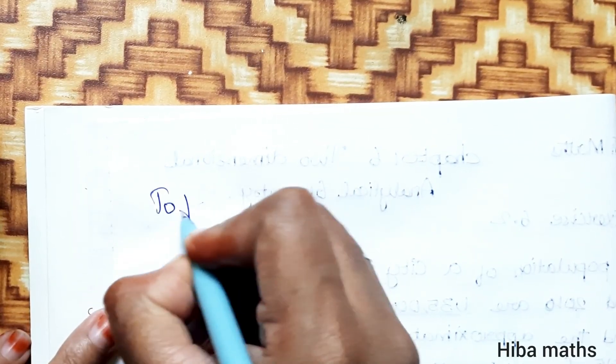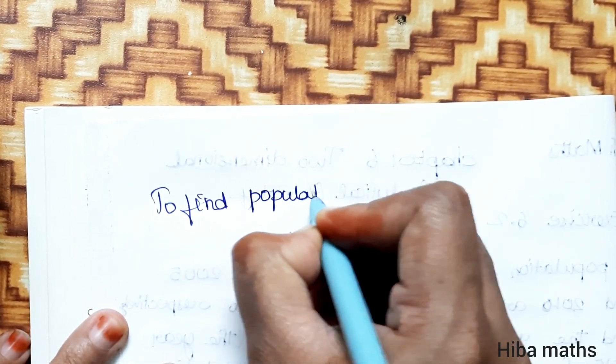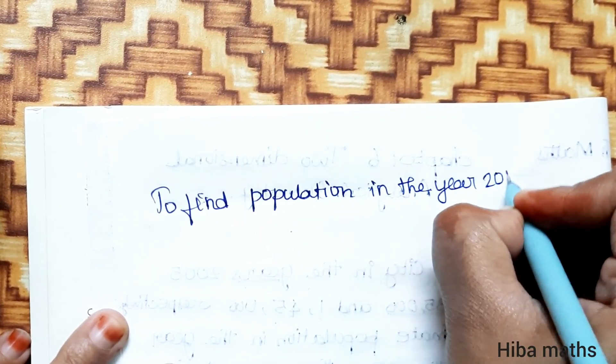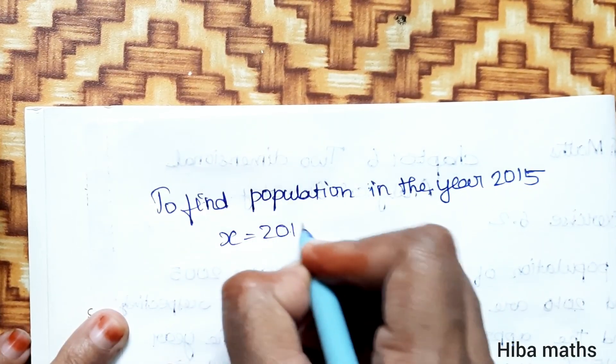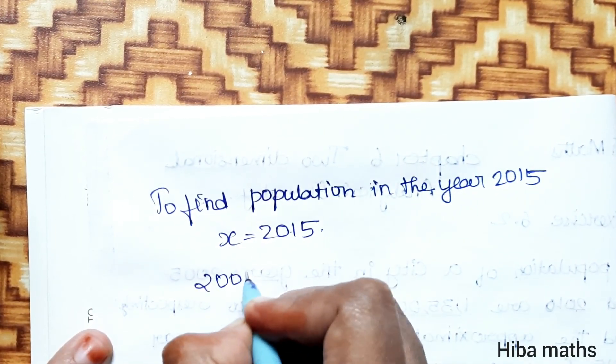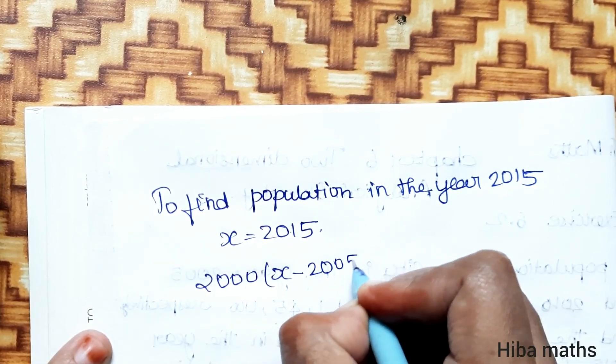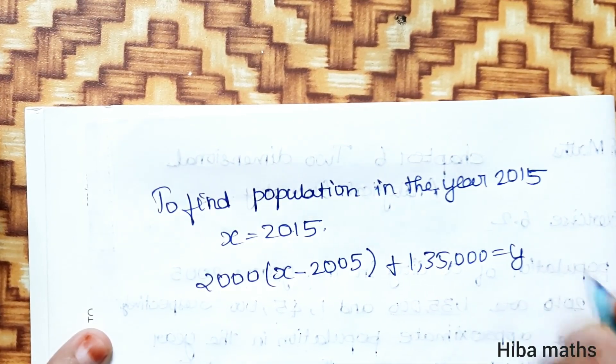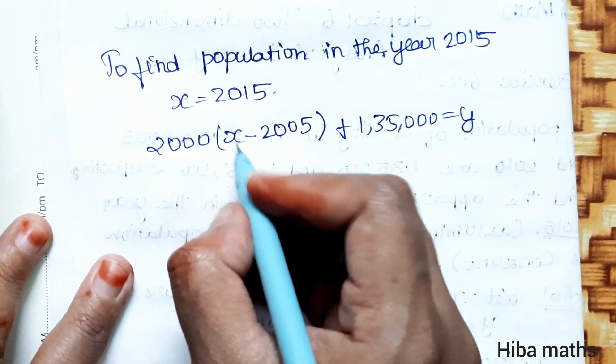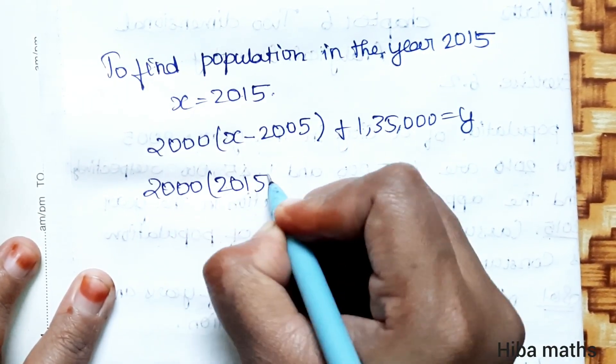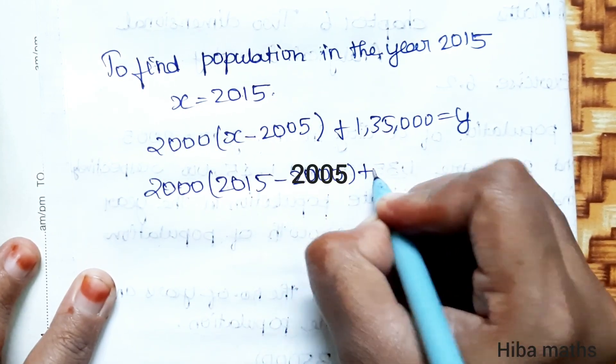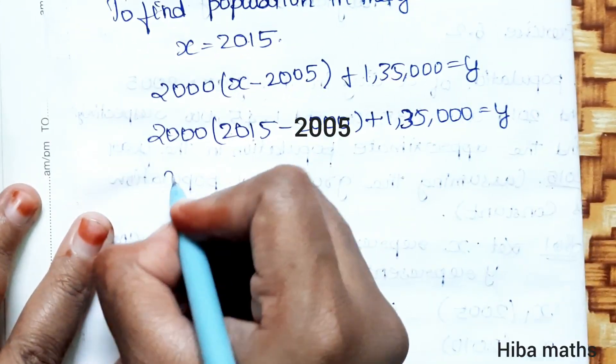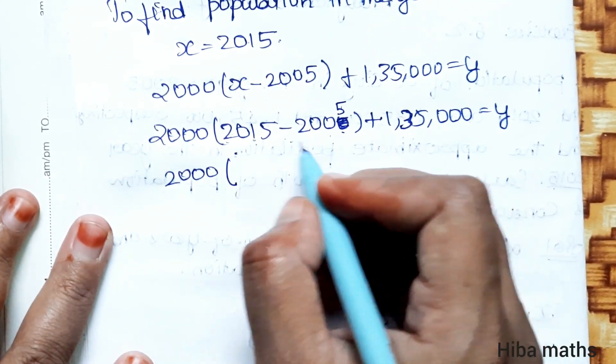Next we have to find the population in the year 2015. So, x equals 2015. Substituting: 2,000(2015 - 2005) + 1,35,000 = y. So 2015 minus 2005 equals 10.